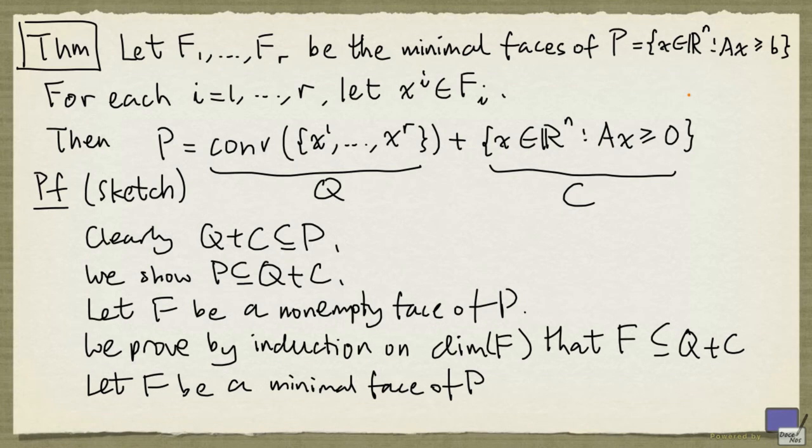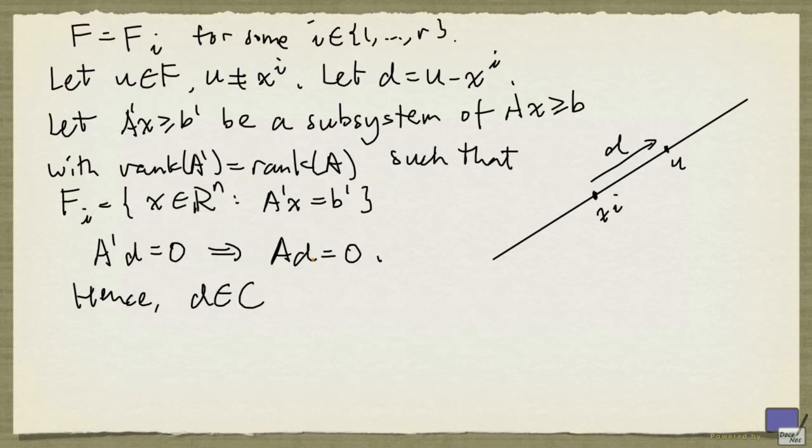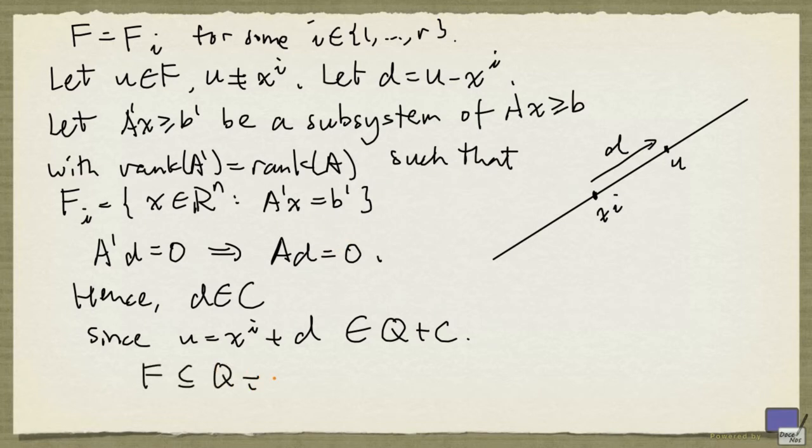Because in order for D to be in C, A times D is at least 0. But we have exactly 0 here, so that's fine. So what this means is, U is Xi plus D, but Xi is in Q, and D is in C, and so U is in Q plus C. That means that F is a subset of Q plus C. And that establishes the basis case for induction.